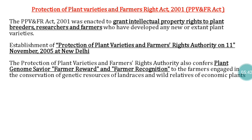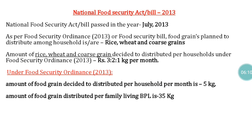For the effective implementation of the PPVFRA Act, the government of India established the Protection of Plant Varieties and Farmers Rights Authority on 11th November 2005, with headquarters in New Delhi. This authority also gives a reward to farmers in the name of 'Genome Savior,' mainly for farmers involved in the conservation of useful land races, wild relatives, and economically useful plant genetic resources.